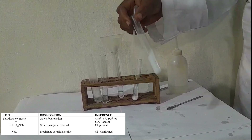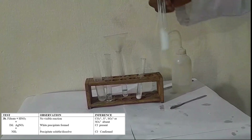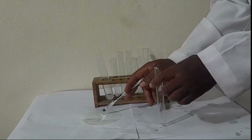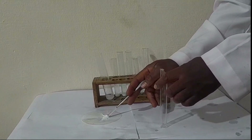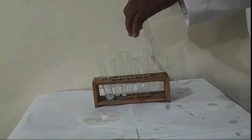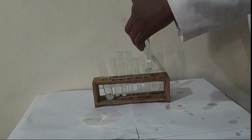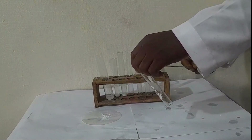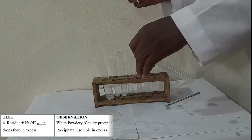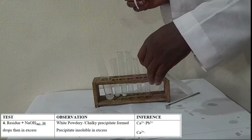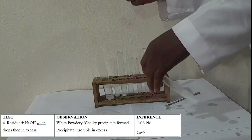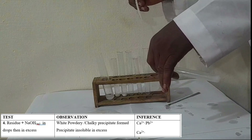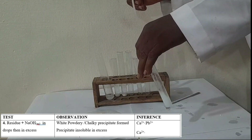Now for the residue. A sample of residue plus sodium hydroxide gives a white chalky precipitate. In excess NaOH, the precipitate remains — it's insoluble. This shows the presence of calcium ion.